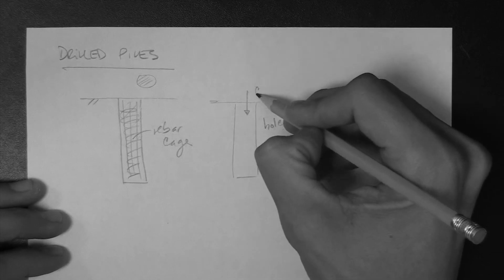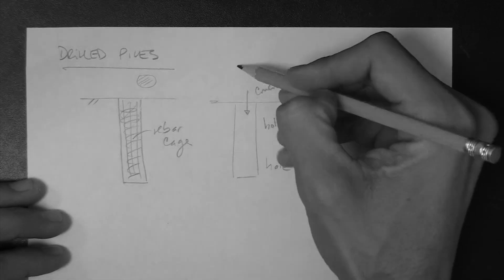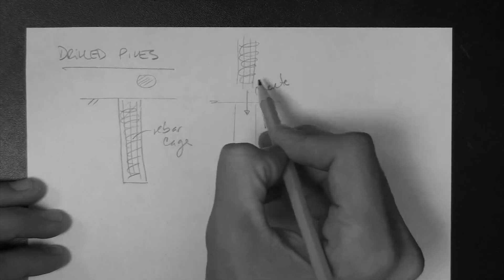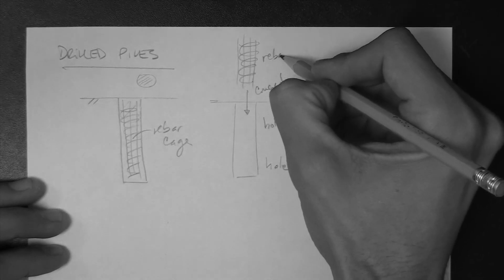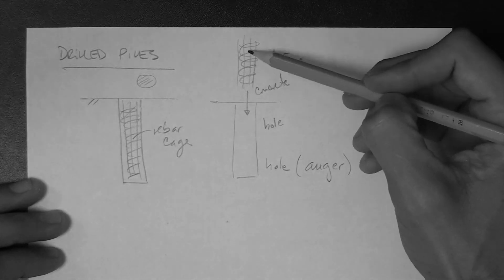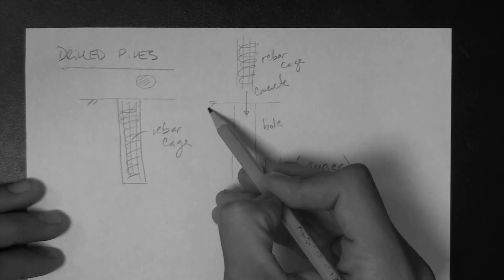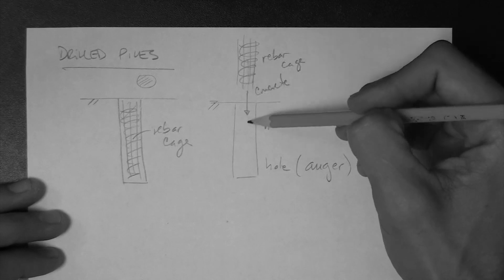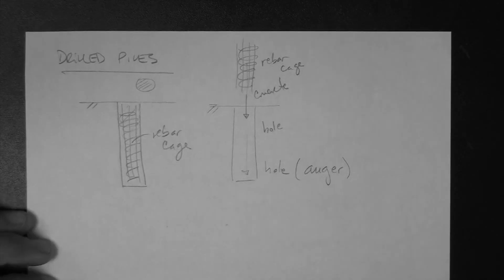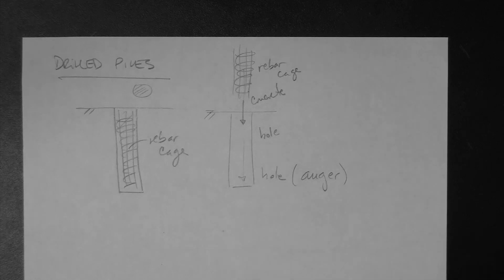You fill it with concrete, and then you insert a rebar cage that has been constructed outside. You insert it in, dip it into the concrete. So, there are different ways that this is done.